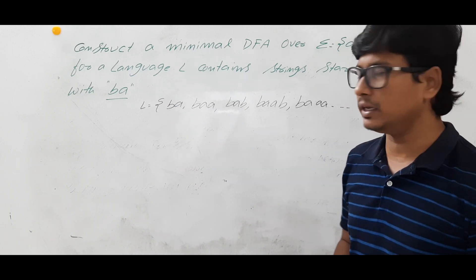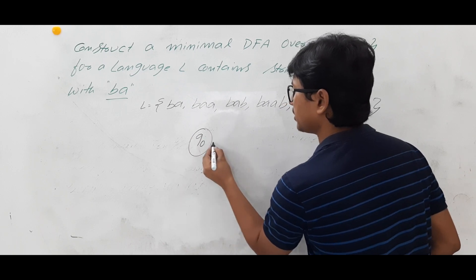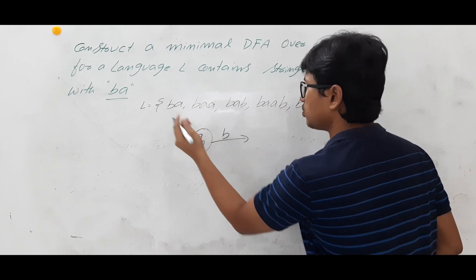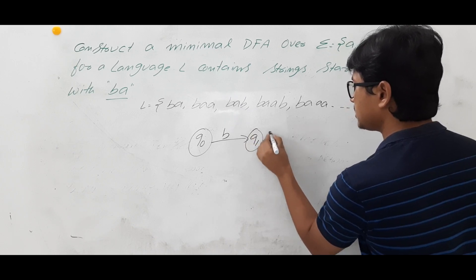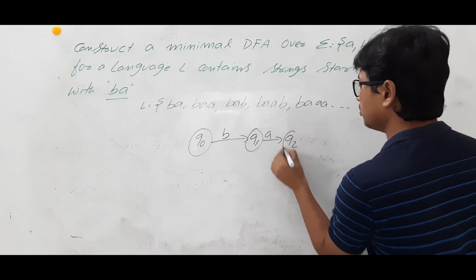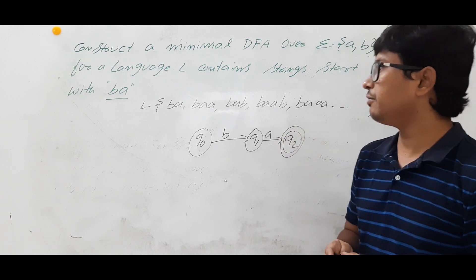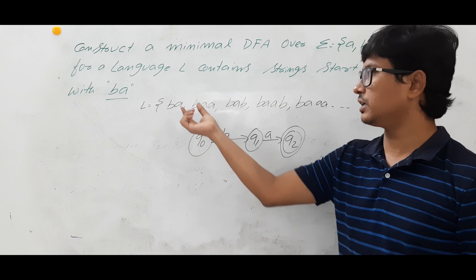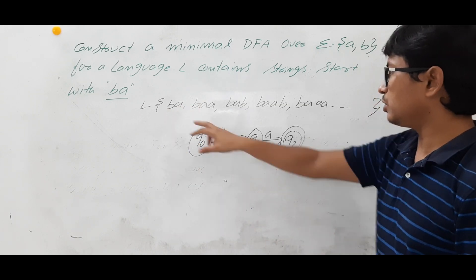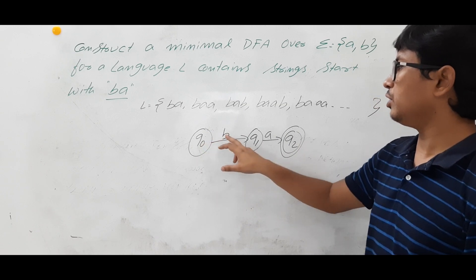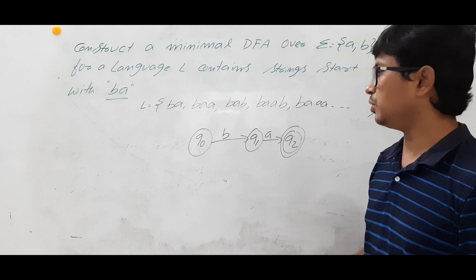Since the smallest string is BA, we will construct the skeleton DFA first. The process is: take the smallest string and construct the basic DFA from it, then build on that. So from Q0 on B, I am going to Q1; from Q1 on A, I am going to Q2. So BA is accepted.